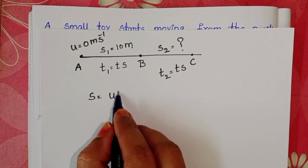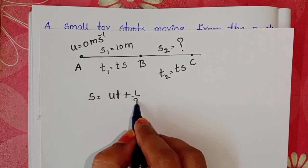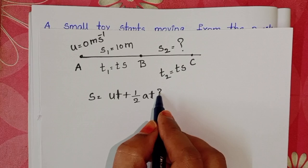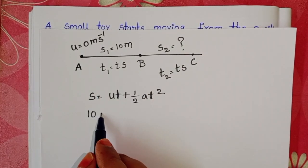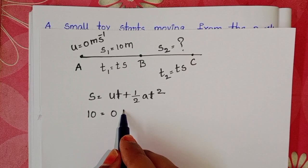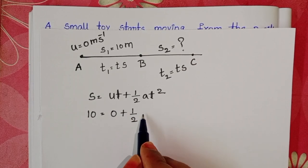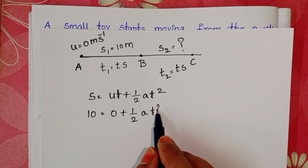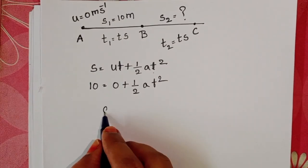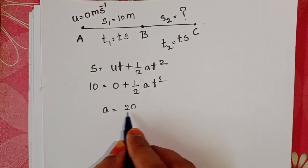S equals ut plus half a t-square. From A to B, distance is 10 meters. Initial velocity 0. Acceleration A and time is t seconds. From this, acceleration equals 20 by t-square.